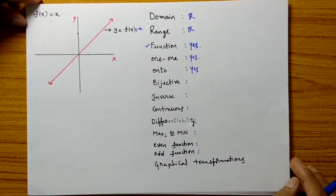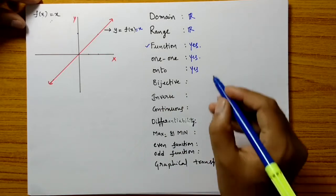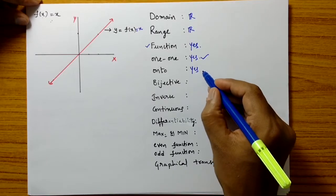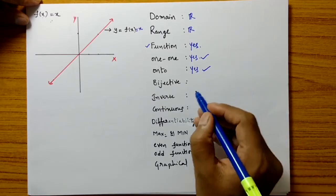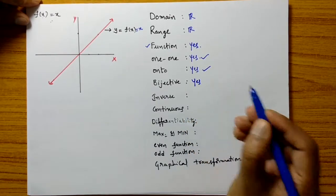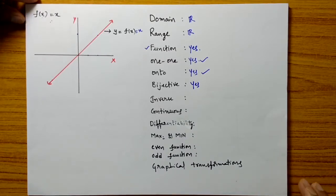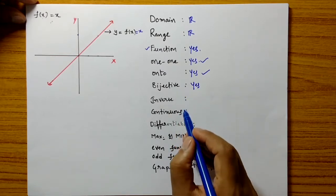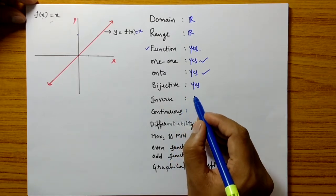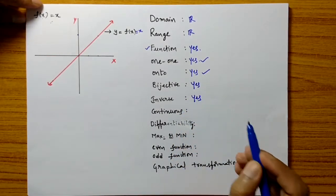Is it a bijective function? A function which is both one-to-one and onto is called a bijective function. This function is one-to-one and onto, so it is definitely a bijective function. We know that an inverse exists only when the function is bijective. This function is bijective, so its inverse exists.